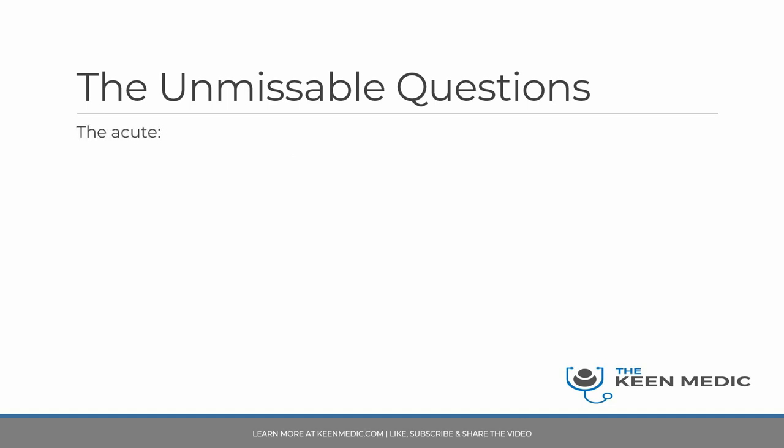The second thing is the acute stuff — the stuff that will potentially kill the patient. Because we are talking about Paces and you being a medical registrar, we're going to focus mainly on the main things you are going to be dealing with in the exam situation and in real life. This will be stuff like upper GI and lower GI bleeding, and also hemoptysis. These will be among the most common things that you will see in terms of bleeding, and these are the things you need to always be considering in the acute setting when ruling out conditions that could potentially kill a patient.